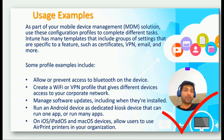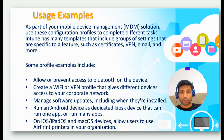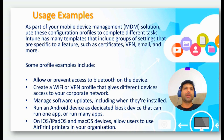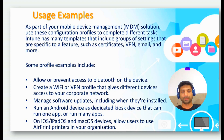In Group Policy, you can control only Windows-based systems. But when it comes to Intune, you can manage Windows-based systems, macOS, iOS, Android devices, and Linux machines to some extent. So that's the key difference between Group Policy and Intune — Group Policy has a limited scope, but in the case of Intune, it covers a much wider range of platforms.